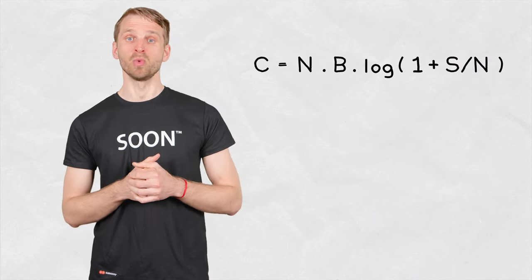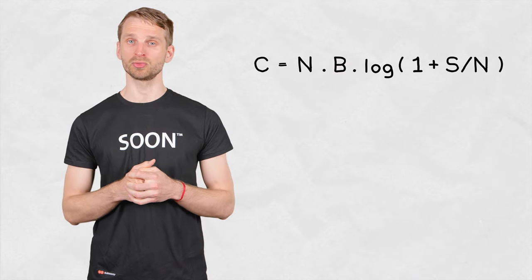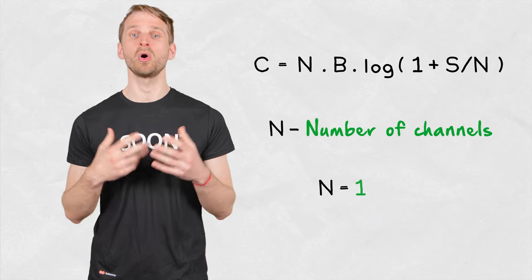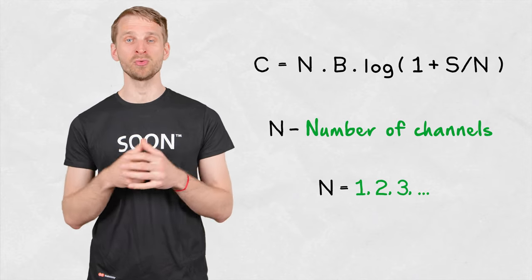This is a simple wireless link capacity equation. Besides the higher bandwidth or increasing the signal to noise ratio, growing the number of channels on either side of the link is also a way to increase the throughput capacity, which is where MIMO comes in.